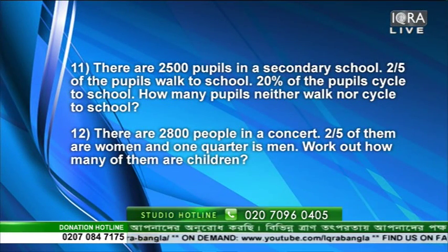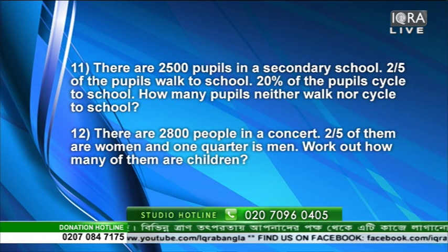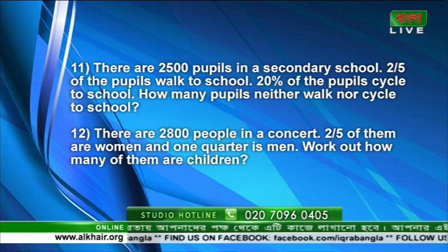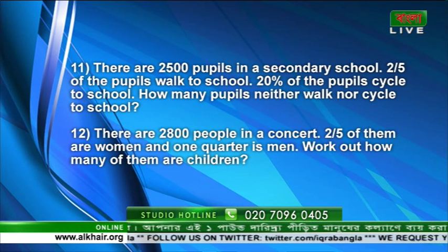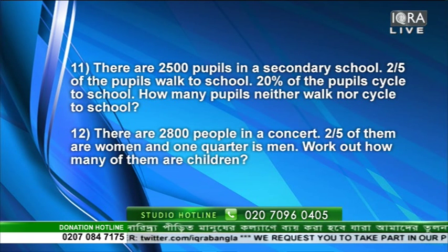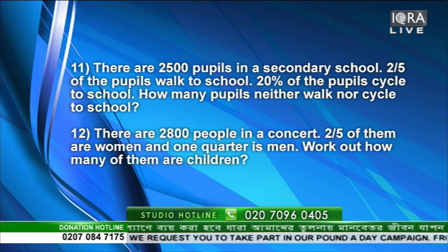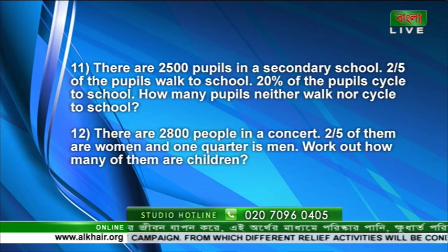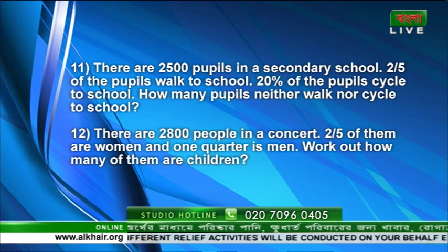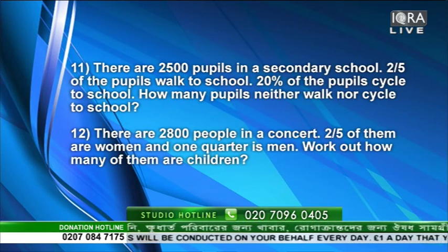On slide four: there are 2500 people in a secondary school. Two-fifths of the pupils walk to school and 20 percent of the pupils cycle to school. How many pupils neither walk nor cycle to school? Teacher, can you explain this question to the children?